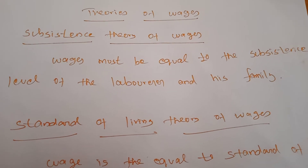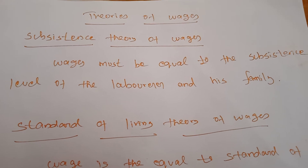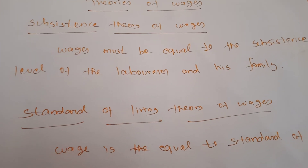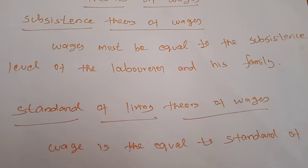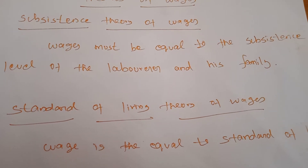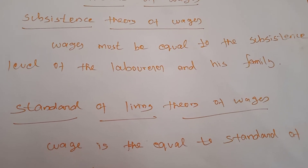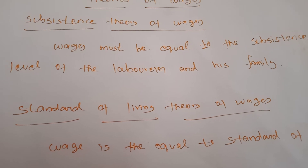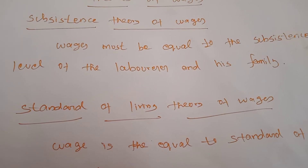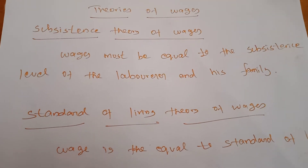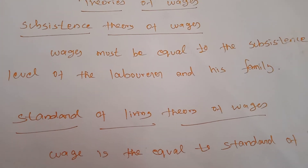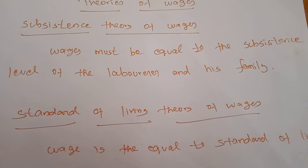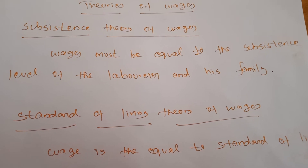This theory has many criticisms. First, the role of trade unions in collective bargaining is not considered. Normally, trade unions exist among labourers and come to bargain with producers to increase the wage rate, but this theory does not account for trade unions. Second, this theory does not explain the differences in wages across different occupations. Wages are determined based on occupation and the productivity of labour, but this theory does not explain those differences.